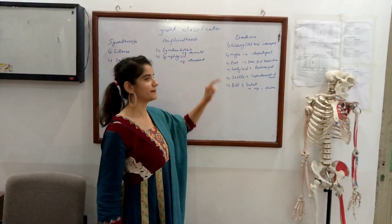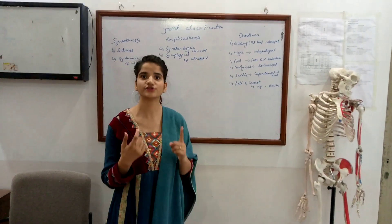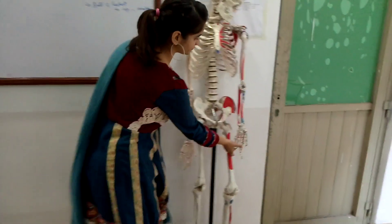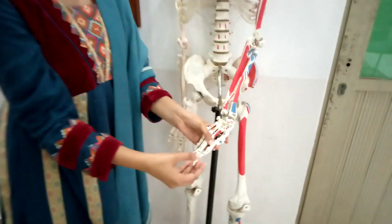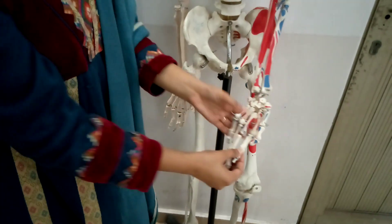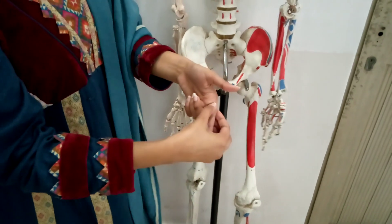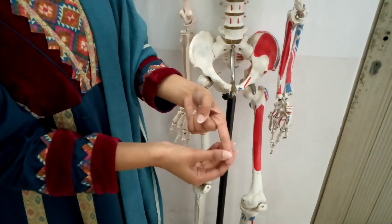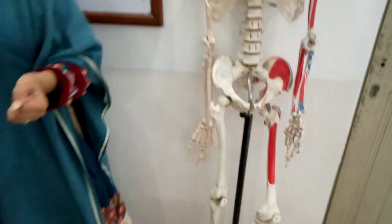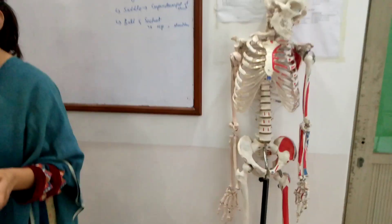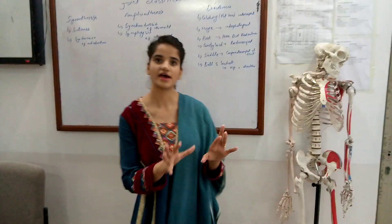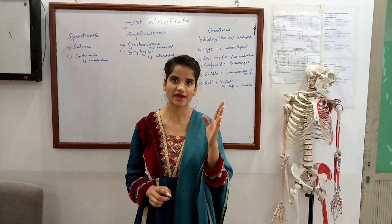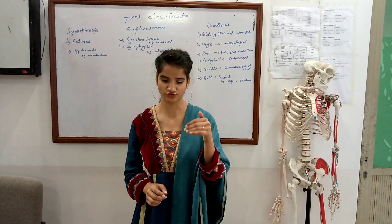Then, the hinge joint. Its example is the interphalangeal joint — the joint formed between the phalanges. These are the phalanges and the joint formed between them is the interphalangeal joint. The characteristic of this joint is that the bones are held together by strong collateral ligaments, which is why they produce a hinge kind of motion.